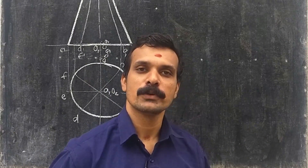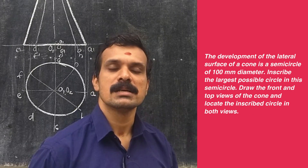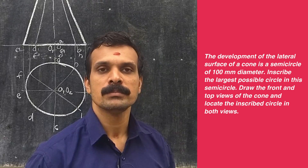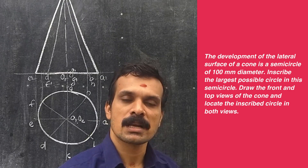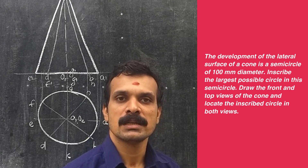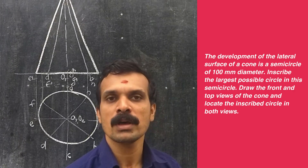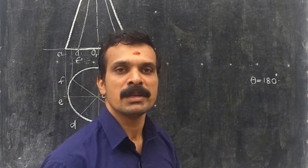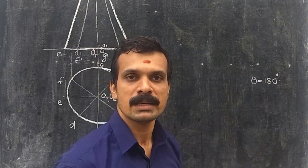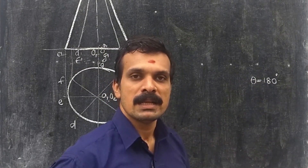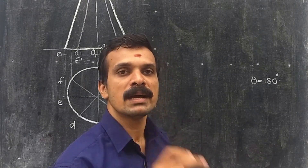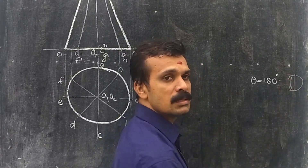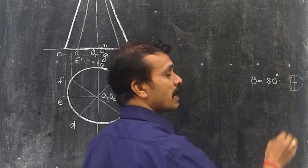We are moving to the next problem. The development of the lateral surface of a cone is a semicircle of diameter 100mm. Inscribe the largest possible circle onto it and locate the point on the front and top views of the cone. It is given that the development is a semicircle, which means theta is equal to 180 degrees. The diameter is 100mm, so the radius is 50mm.